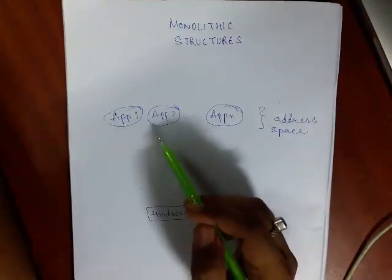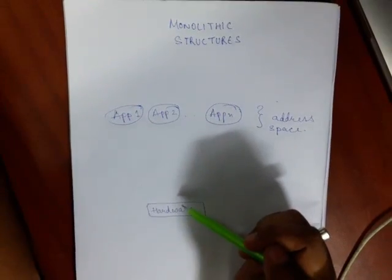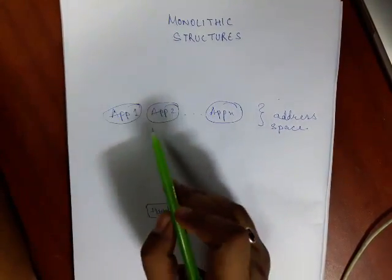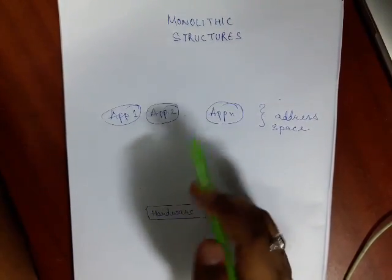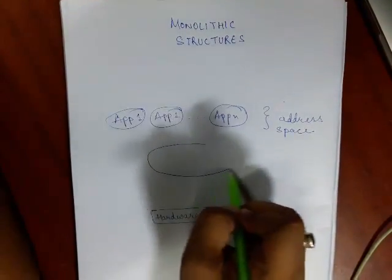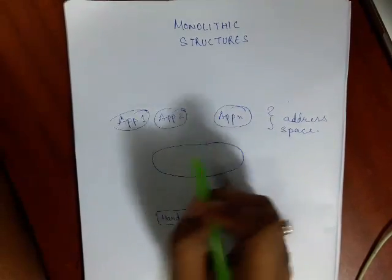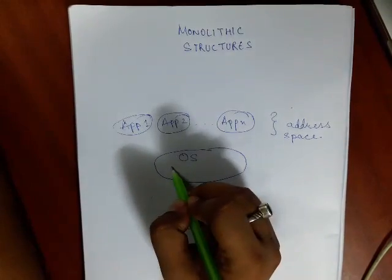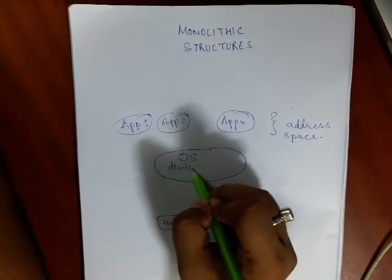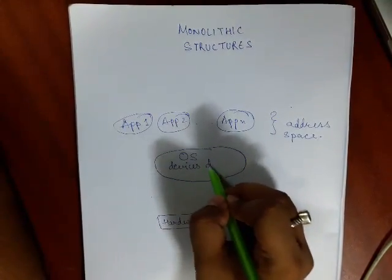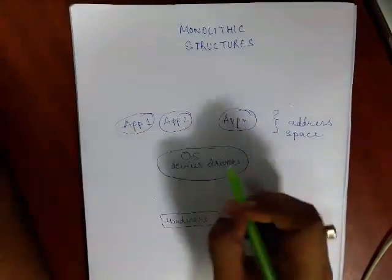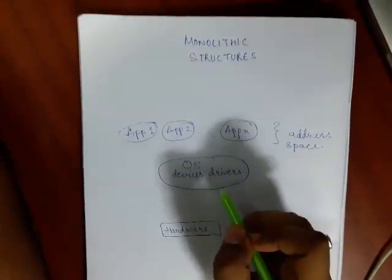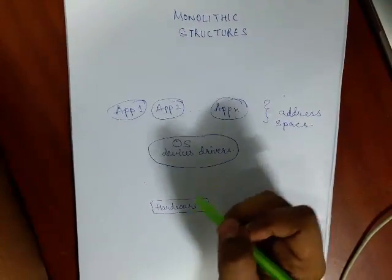All the services that the application may expect from the OS are in this block. This block will contain things like OS and device drivers, which includes file system, network access, scheduling applications on the CPU, virtual memory management, etc.